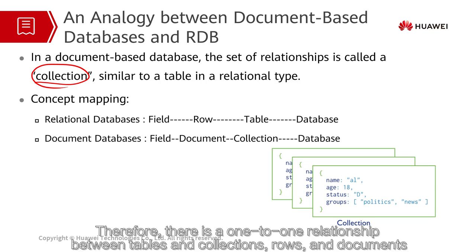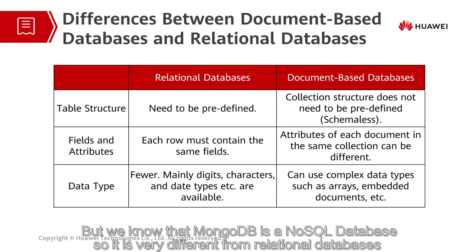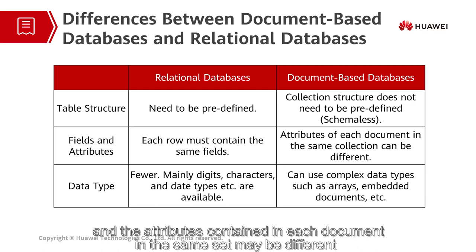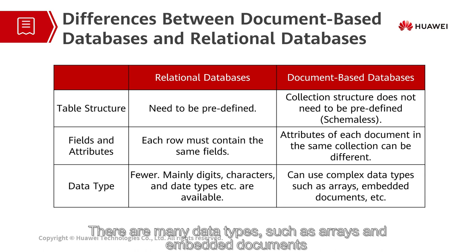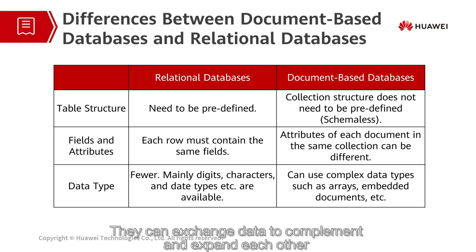Therefore, there is a one-to-one relationship between tables and collections, and between rows and documents. But MongoDB is a NoSQL database, so it is very different from relational databases. Compared with the traditional relational model, the collection structure in the document type does not need to be defined, and the attributes contained in each document in the same collection may be different. There are many data types such as arrays and embedded documents. However, MongoDB and traditional relational databases are not mutually exclusive — they can exchange data to complement and expand each other.